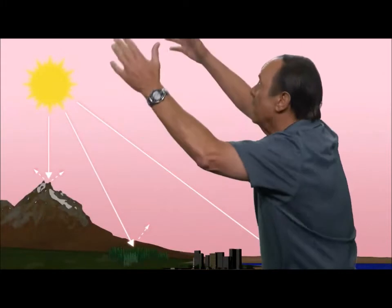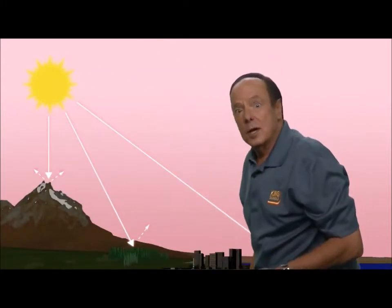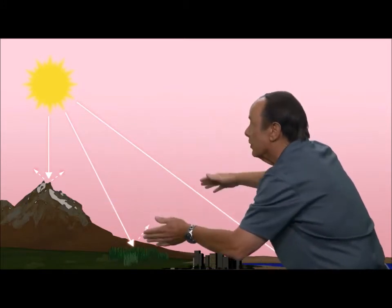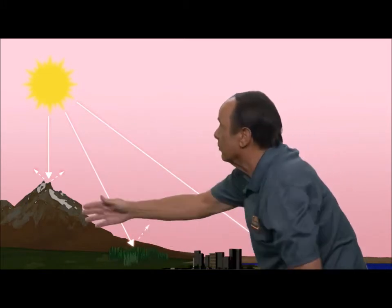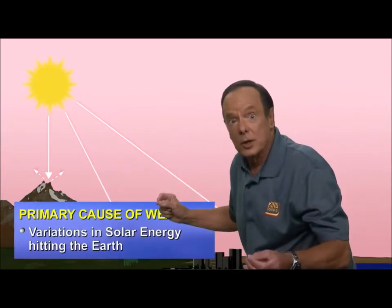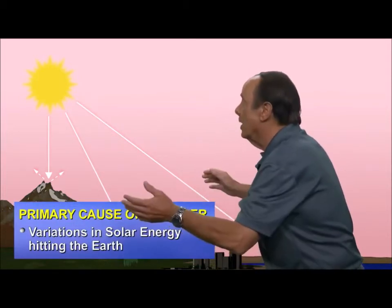The first thing you want to know is that the primary cause of weather changes is unequal heating of the Earth's surface. The amount of the sun's energy, or solar energy, reaching the surface varies in different regions of the Earth, and it's those variations in solar energy that cause the changes in the Earth's weather.